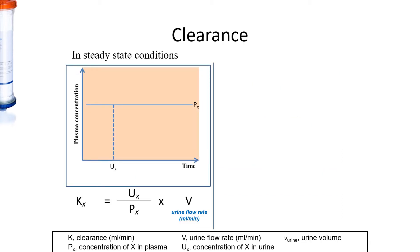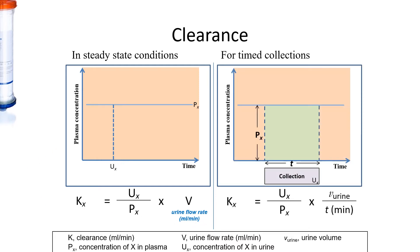In steady state conditions, this formula will work, and often we will use a timed collection. Let's say we want to look at the creatinine clearance. This will require a collection over a period of time, and we measure the concentration of the substance in the urine and the volume of urine collected divided by the duration of the collection. And of course we will also need to measure the plasma concentration of the substance. So this is the formula for a timed collection looking at the clearance of a particular substance.